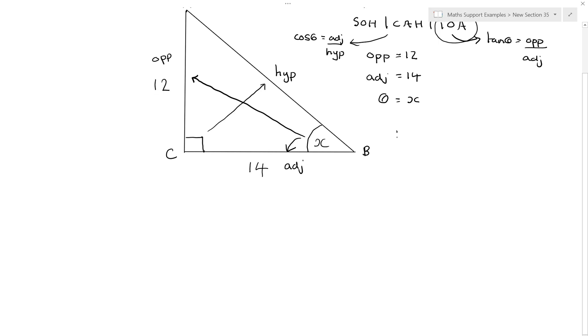So we can say that tan theta, which is our tan x, is equal to opposite over adjacent, which is 12 over 14.